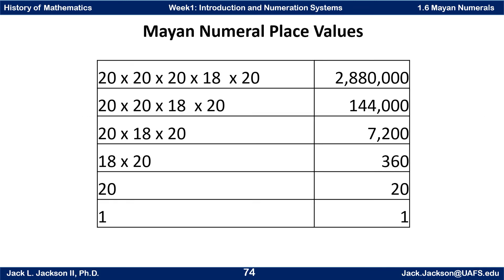Here are the values for the first several digits in Mayan numerals. The lowest is just single units. The next one is a group of twenty. The next one is eighteen twenties, which is three hundred sixty. The next one is twenty groups of three hundred sixty, which is seven thousand two hundred. The next one is twenty groups of seven thousand two hundred, which is one hundred forty-four thousand.